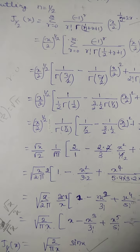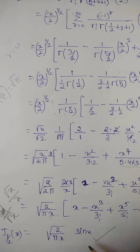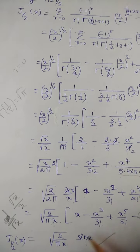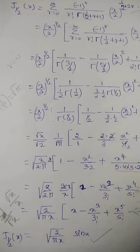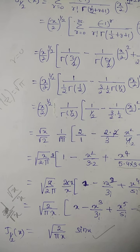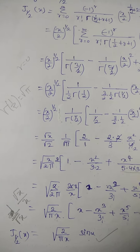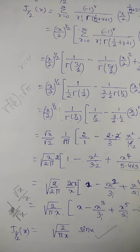So this is how we prove that J_{1/2}(x) = √(2/πx)·sin(x). Similarly, if it were cos(x), we would follow the same approach. Thank you.